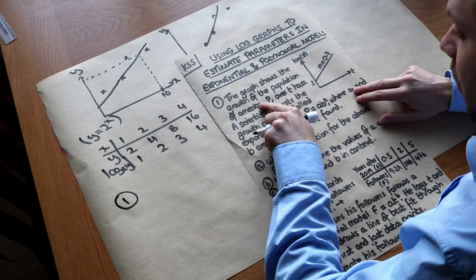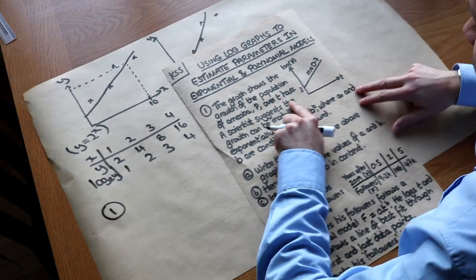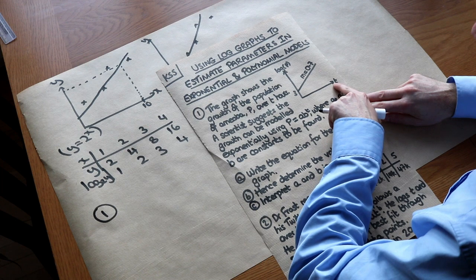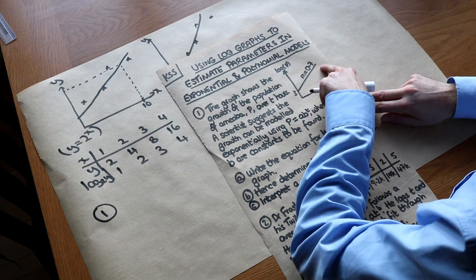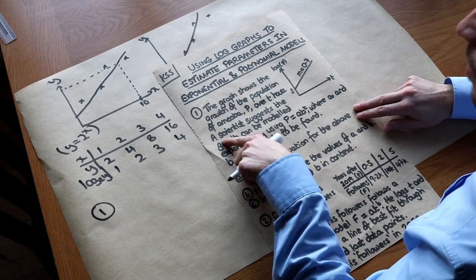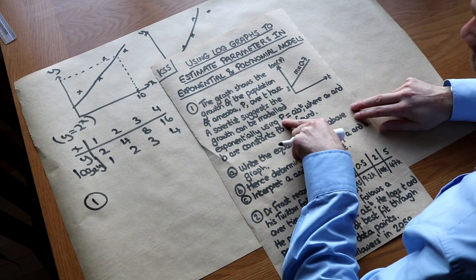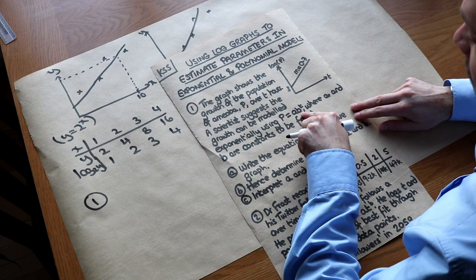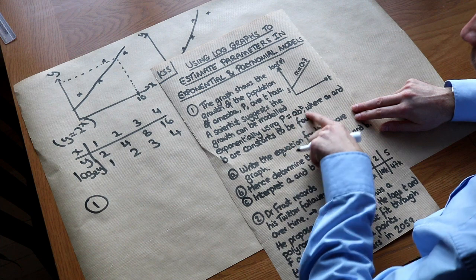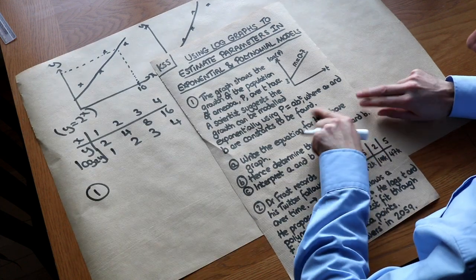The graph here shows the growth of the population of amoeba P over T hours. We have log of P plotted against T, and we can see a linear model. That means the original model would have been exponential. Scientists suggest the growth can be modelled exponentially using P equals AB to the T, where A and B are constants to be found.